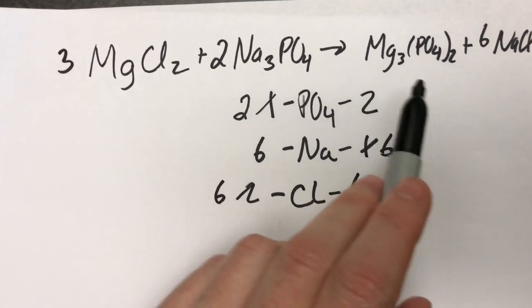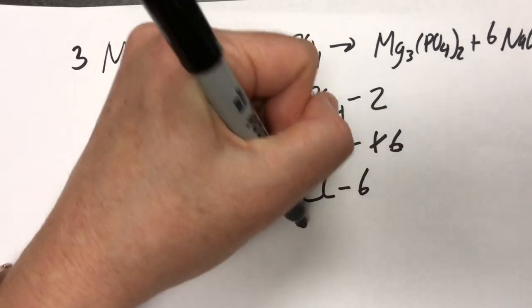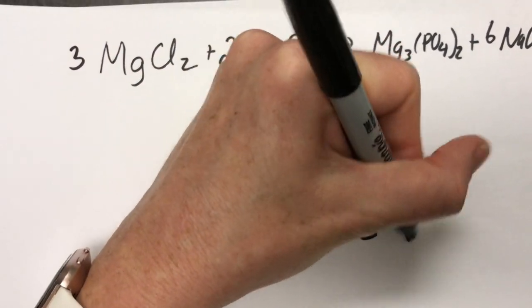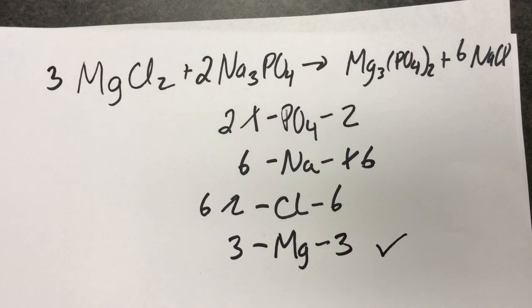And that actually worked really well because we knew that we had to put a three there for magnesium. We move on to magnesium. We have three and three. And our reaction is balanced.